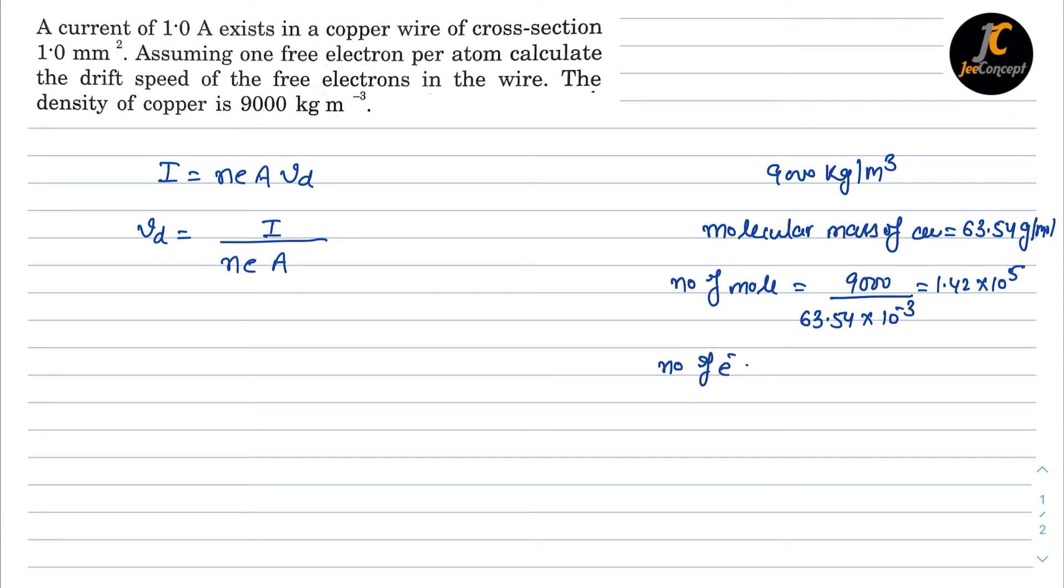And again the number of electrons will become 1.42 into 10 raised to power 5 into the Avogadro number 6.02 into 10 raised to power 23. Right, so the number of electron or N will become 8.52 into 10 raised to power 28.